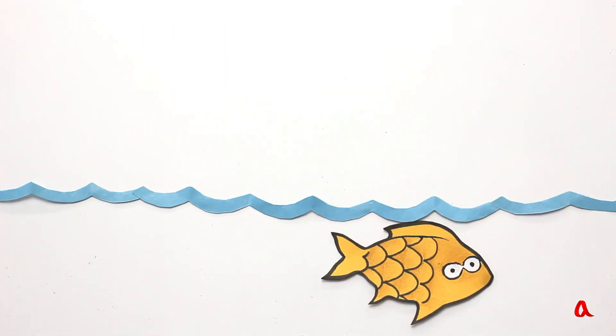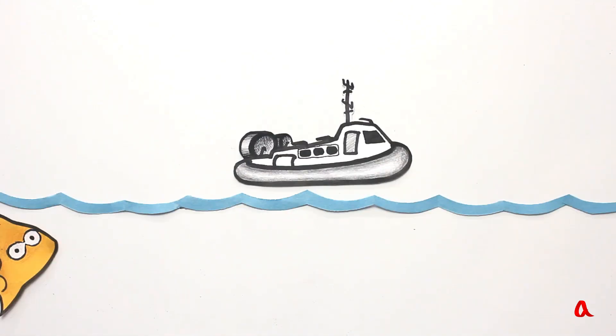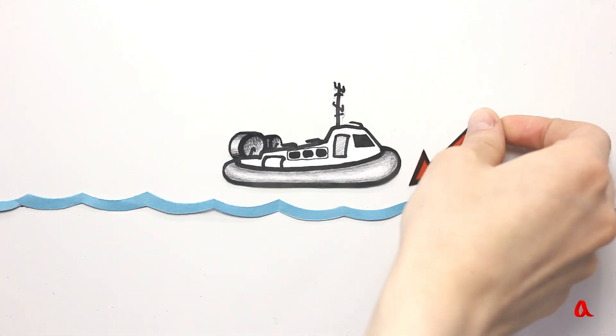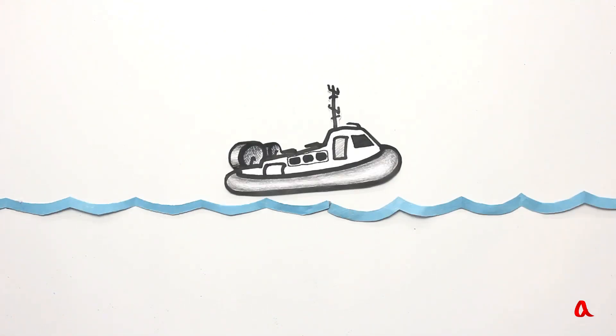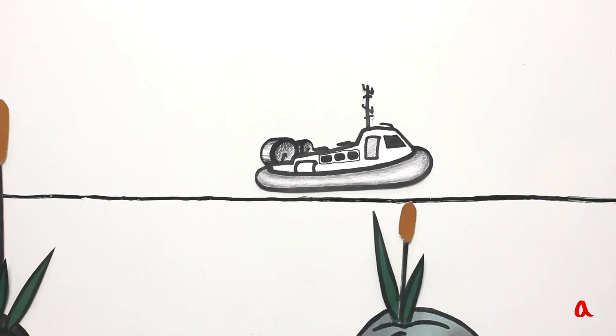An air-cushioned watercraft can move very quickly because it doesn't have to push its way through water. Pressurized air is pumped under its bottom and the craft glides over the water surface. Thanks to the air cushion it moves easily over swamps, sand or snow.